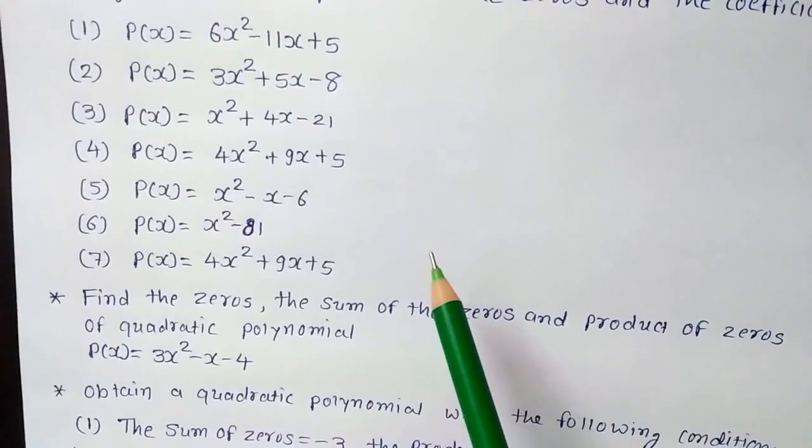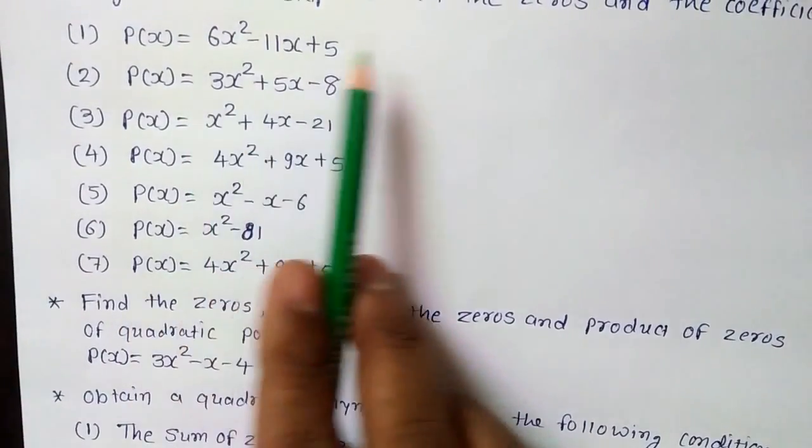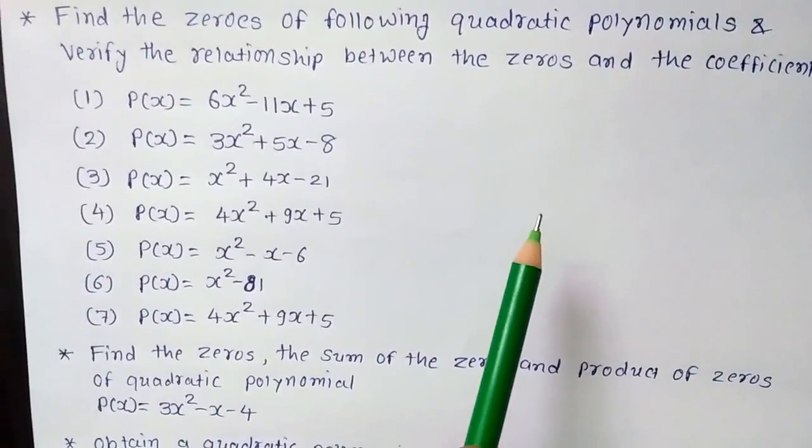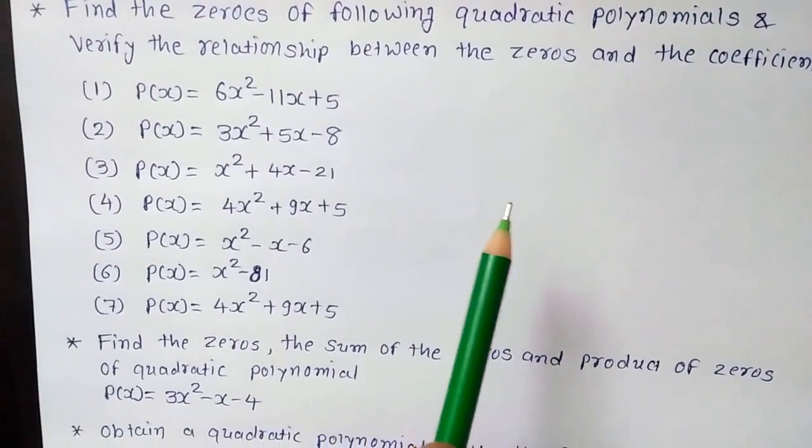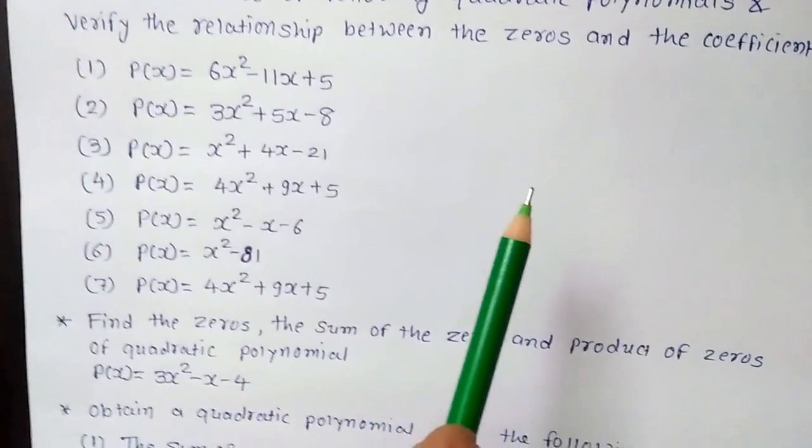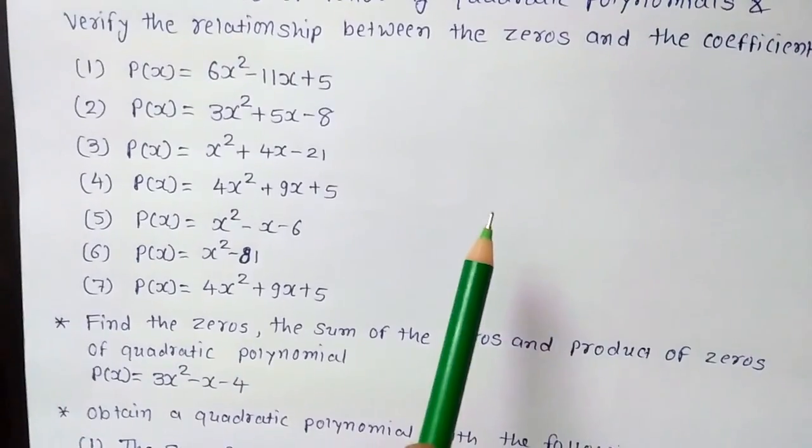After that, you have to show the relationship between the zeros and the coefficient by the formula that is alpha plus beta is equal to minus b upon a and alpha into beta is equal to c upon a.